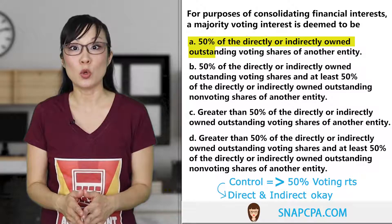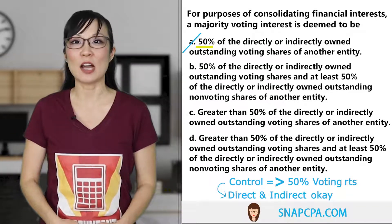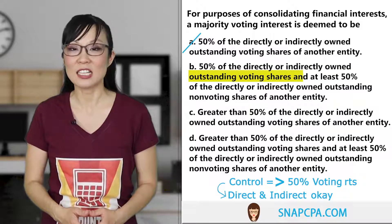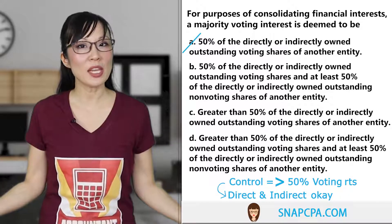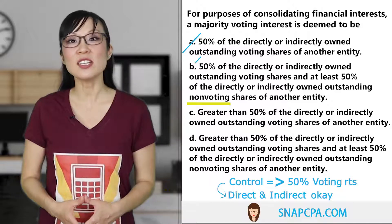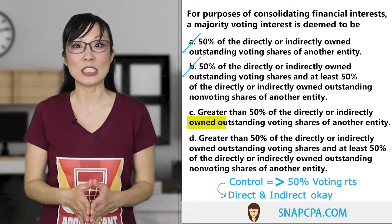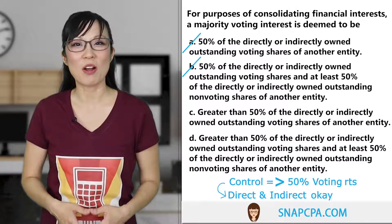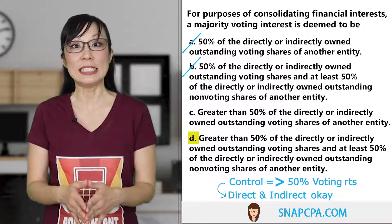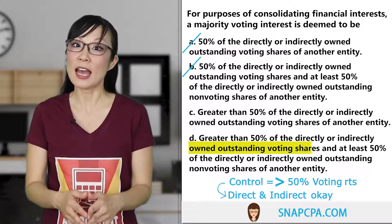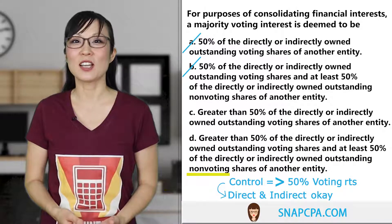Choice A: 50% of the direct or indirect owned outstanding voting shares of another entity. This is close, but we need more than 50%, not just 50%, so A is out. Choice B: 50% of the direct or indirect owned outstanding voting shares and at least 50% of the non-voting shares. We don't care about non-voting shares — consolidation is all about control, and non-voting has no control powers. Choice C: greater than 50% of the direct or indirect owned outstanding voting shares of another entity. This fixes what was wrong with A. Choice D adds non-voting shares again, which we don't care about. So C is our answer.